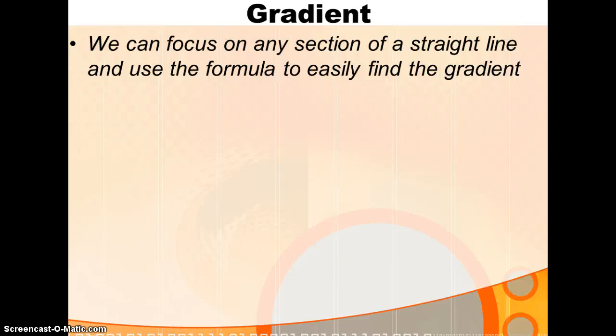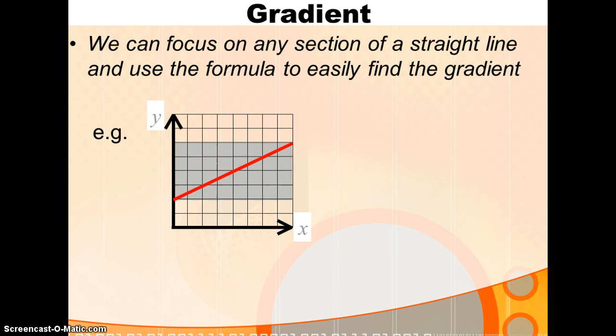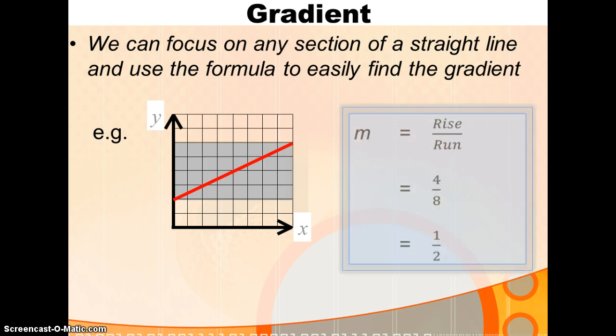Now, it doesn't matter what part of a straight line you focus on. You can use any section of a straight line to find its gradient. Lines go on forever, and we always look at a restricted section anyway. Now, as you look at that line, if we consider this section, the whole part of what we see, we see that the rise is 4, the run is 8. You've gone 4 up and 8 across. So, the gradient is 4 over 8, which is 1 over 2, or a half.